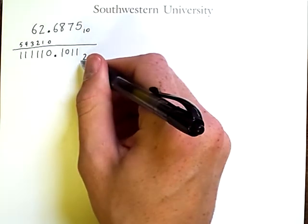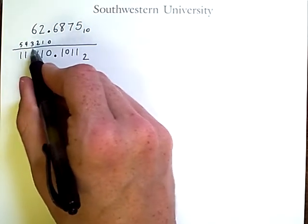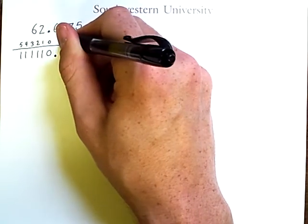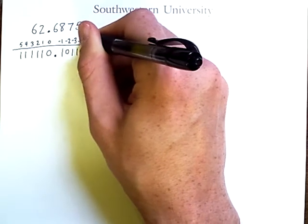But what about these values to the right of the binary point? Well, we've already been counting down to 0, and it turns out that we can keep counting down into the negatives: negative 1, negative 2, negative 3, and negative 4.